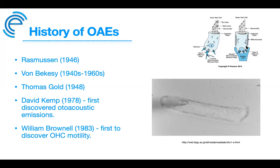The medial olivocochlear pathway has cell bodies located in the pre-olivary medial nuclei of the superior olivary complex, comprised mostly of myelinated fibers that synapse on the outer hair cells. It's generally acknowledged that the medial olivocochlear pathway plays a central role in modulating the mechanical behavior of the outer hair cells, and it does play a role in increasing or decreasing OAE levels.